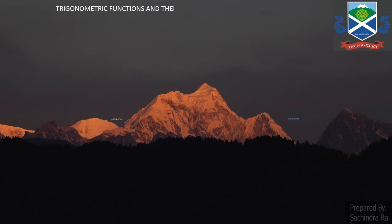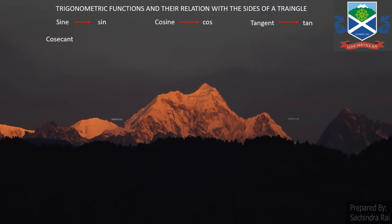Now let us look at the trigonometric functions and their relationship with the sides of the triangle. We have six trigonometric functions: sine (written in short as SIN), cosine (or cos), tangent (or tan), cosecant (or cosec), secant (or sec), and cotangent (or cot). So the short forms written are: sin, cos, tan, cosec, sec, and cot.